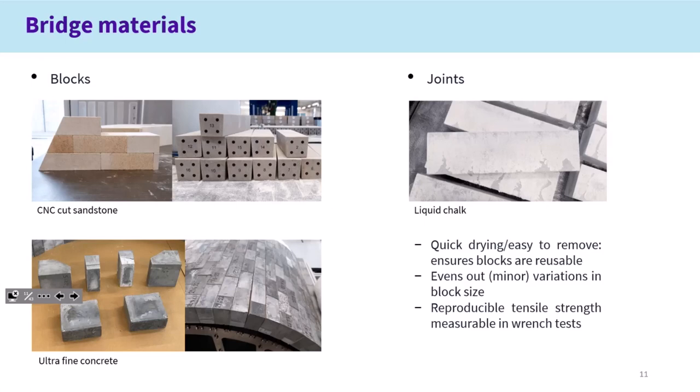For our 3D models, particularly the skew arches, we moved to casting blocks out of ultrafine concrete. Skew arch elements in particular are quite complicated. For the joints, the aim wasn't to accurately model a lime mortar, but we needed a joint material which would allow us to build models quite quickly and then dismantle and rebuild them. If you use cement, it tends to cause a lot of problems in cleaning the blocks and making them reusable. It also helps even out minor variations of block size even with CNC cutting, and we can reproduce the strength characteristics to feed into models.